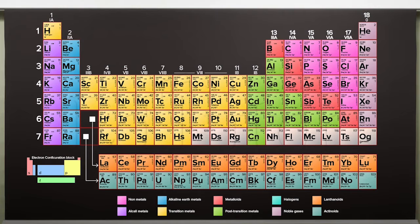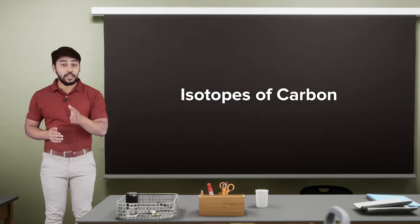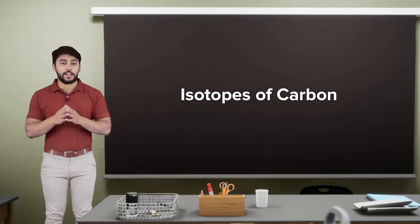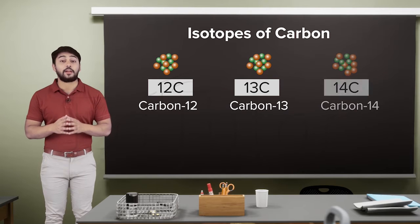Let's take a look at an example for clarity. On this side, you can see three different isotopes of carbon expressed as carbon-12, carbon-13, and carbon-14.